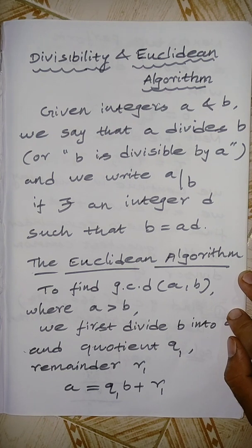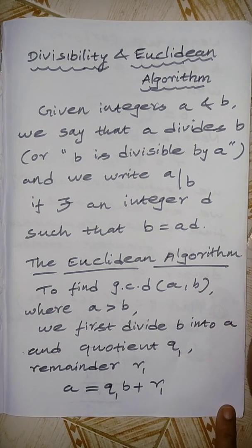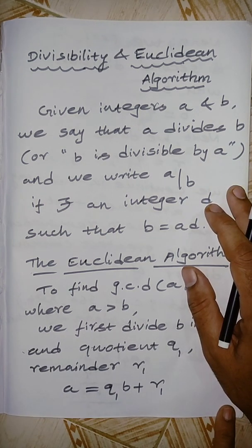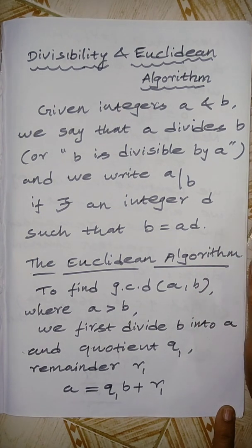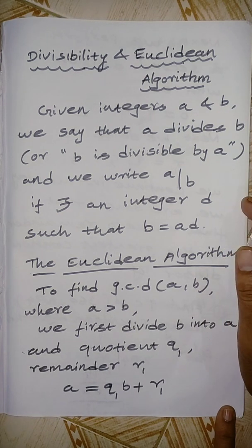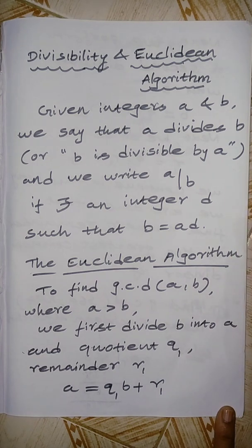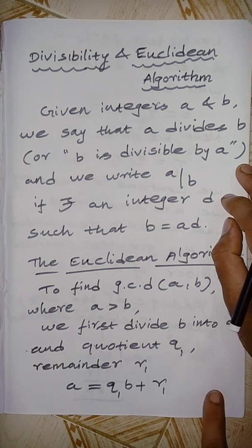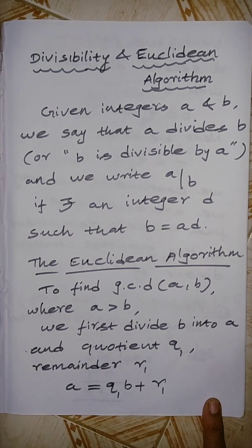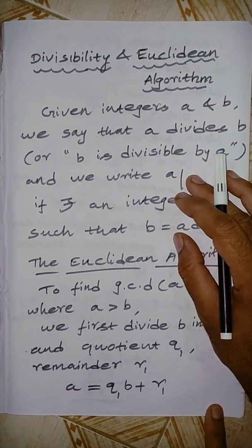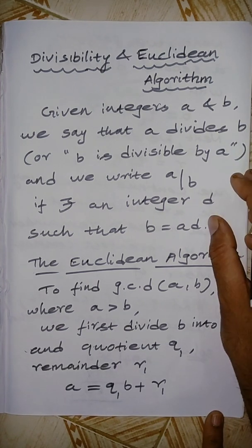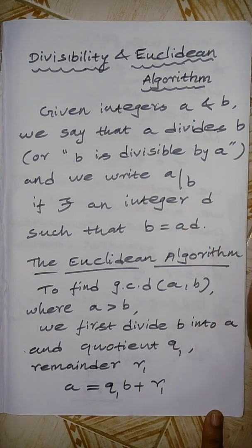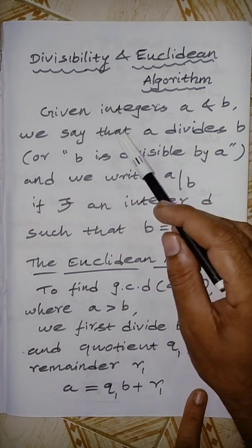Welcome to the mathematics video on this YouTube channel. I am Krishna Omar from the Department of Mathematics. This video is on number theory and cryptography — a very beautiful paper. Last class we covered big O notation, binary to decimal and decimal to binary conversion, divisibility, and the Euclidean algorithm.